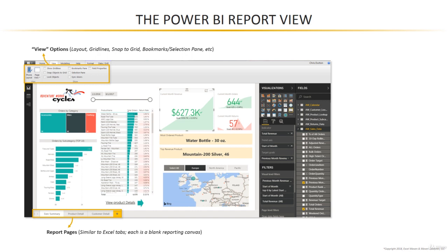On the right side, you've got two primary panes — these are like mission control for reporting — visualizations and fields. Starting with visualizations, this shows you all of the chart templates that you have to work with: charts, slicers, matrices, different types of maps, et cetera. Just keep in mind that for the purposes of this course we're working with the standard default set, none of the preview options. But it's very easy by clicking those three dots in the lower right to import either new preview visuals or custom visuals.